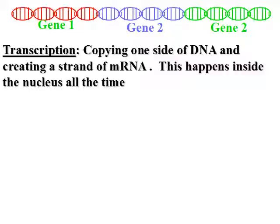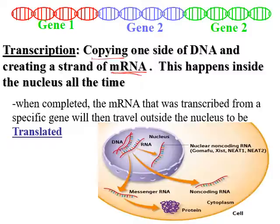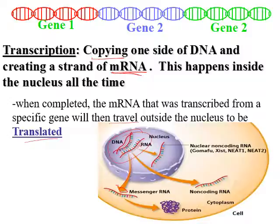The first step to getting your protein is a process called transcription. To transcribe something means to copy. Transcription is the copying of one side of DNA to create a strand of messenger RNA — mRNA. This happens inside the nucleus of most cells most of the time, except during mitosis or meiosis. When completed, the mRNA transcribed from the specific gene travels outside the nucleus to be later translated into a protein.